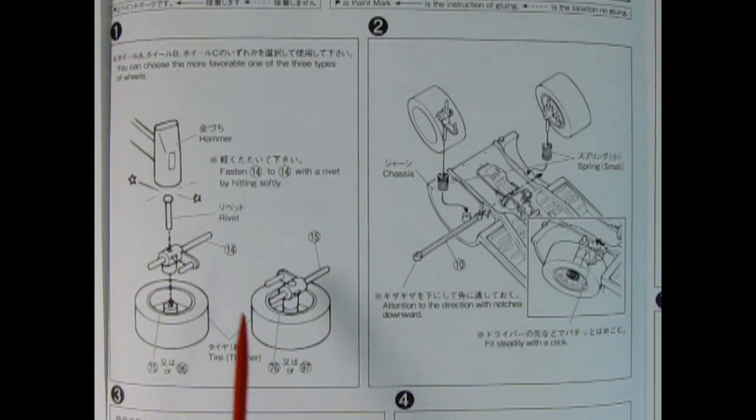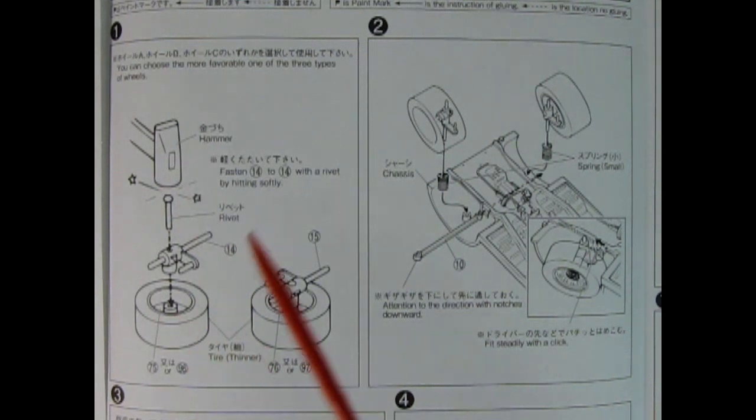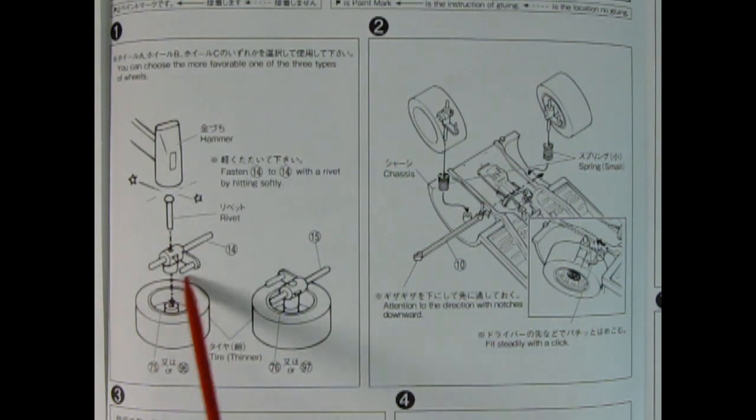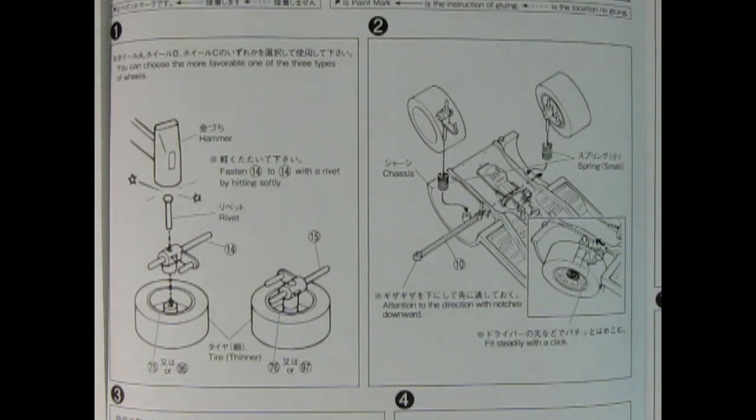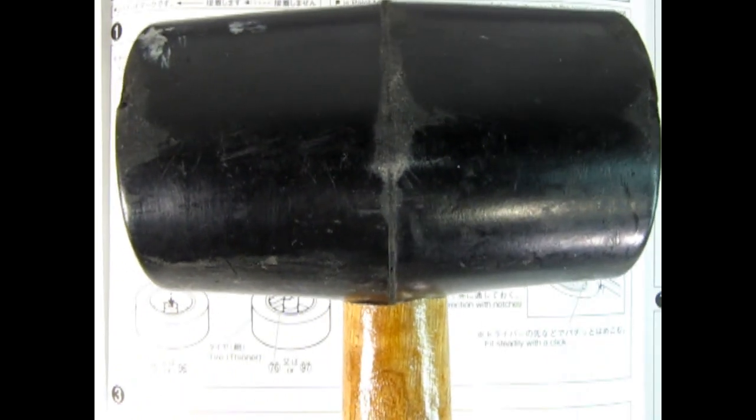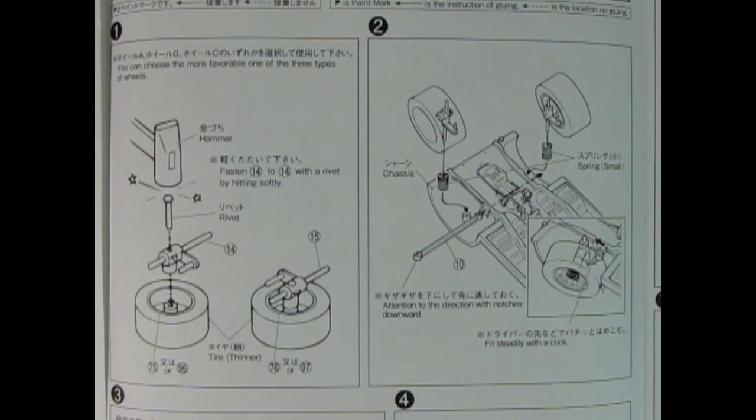Panel 1 shows our wheel assemblies going together and it says you can choose the more favorable one of the three types of wheels. It doesn't show the tire and the wheel going together, but it's just assumed that you would push the wheel into the center of the tire. So you have the wheels here, the king pins. You also have your rivet going through the center and then this hammer here tapping the rivet down. And I love the hammer illustration they use. It looks like you're going to use this kind of hammer. That's my big rubber mallet which looks like the hammer of Thor going in to punch in these little tiny rivets. So I would suggest something smaller.